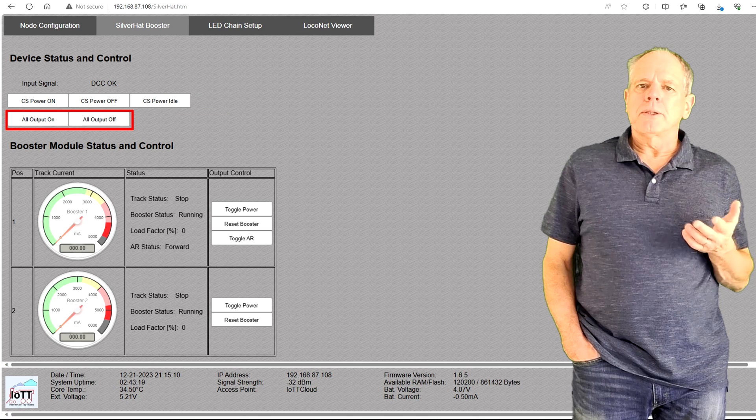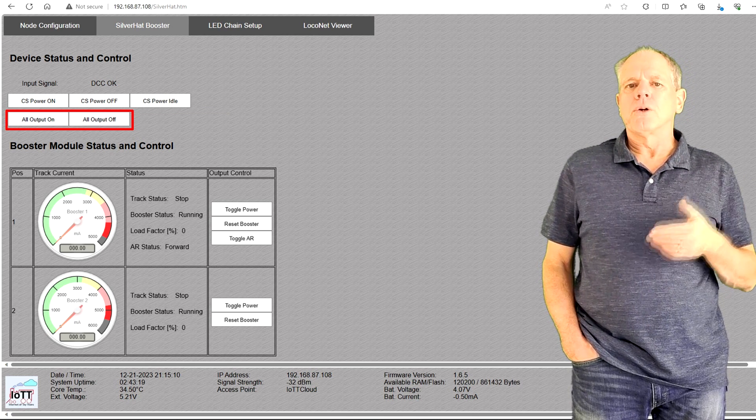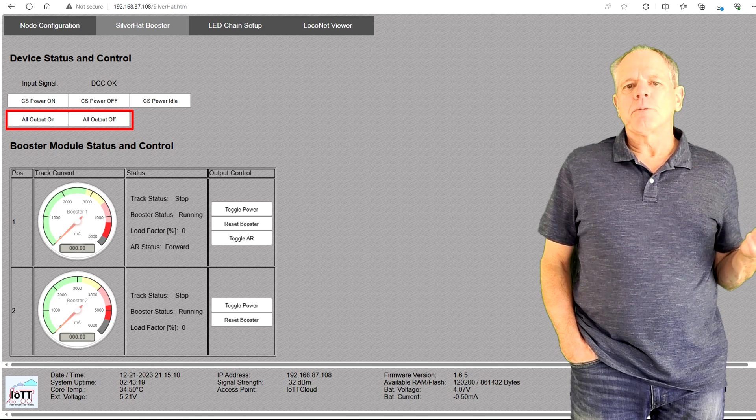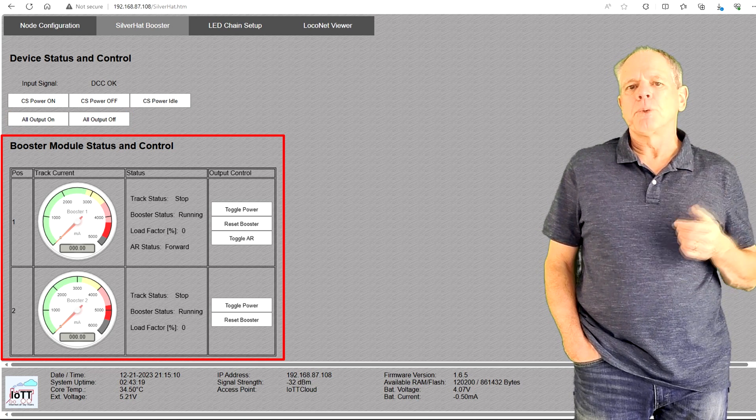Then there are two buttons to set all outputs of this booster stack to on or off. In the section below, you find the status display control inputs for each booster channel, starting with the amp meter.